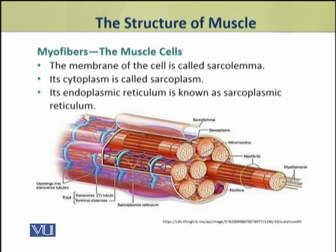Muscle cells in the body have plasma membranes, but these membranes are called sarcolemma. The cytoplasm of the muscle cells is called sarcoplasm, and their endoplasmic reticulum is called sarcoplasmic reticulum.